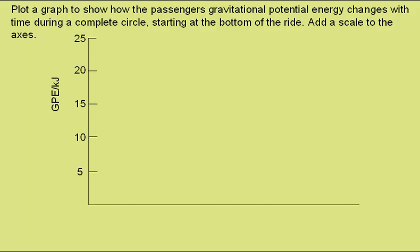Well, the y-axis will give the gravitational potential energy in kilojoules and needs to go to at least 22 kilojoules. The x-axis is time, the halfway point is close to the 22 second mark and the end of the ride will be the 42 second mark.